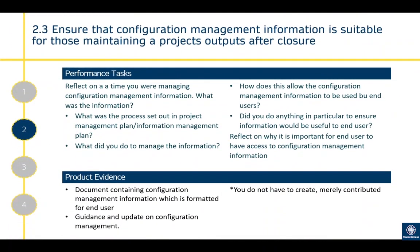Criterion 2.3 is to ensure that configuration management information is suitable for those maintaining project outputs after closure. As mentioned, one of the uses of configuration management information is that after handover — particularly in construction or manufacturing where you're producing physical goods or machinery — people using it after handover need access to this information should they need to make any repairs or replacements. Reflect on what information was provided, what the process was in the project management or information management plan, and what you did to manage the information so it could be used usefully by end users.